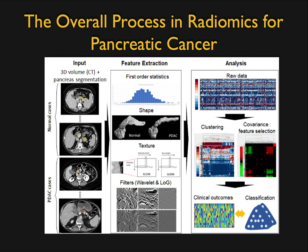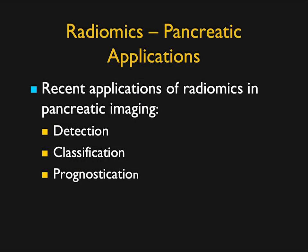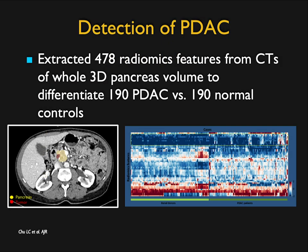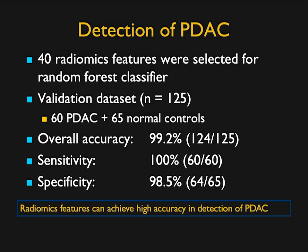Our work is shown in this graph — from input through feature extraction, through analysis, to classification. We initially looked at 478 features on normal and abnormal cases: adenocarcinoma versus normal pancreas. We found that lesions had signatures of cancers, and you could separate cancer from non-cancer. We found that 40 radiomics features gave you all the information you need, with overall accuracy over 99% and 100% specificity.